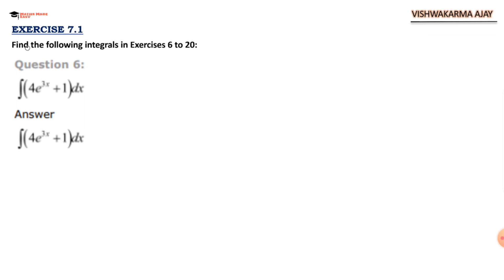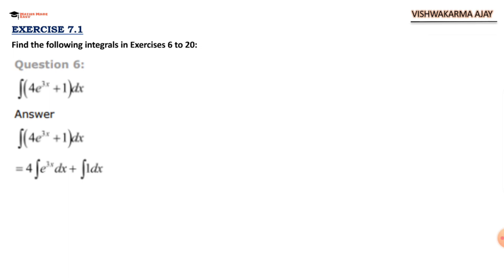This is Part 2 of Exercise 7.1 — find the following integrals, questions 6 to 20. We have to find the integral, essentially finding the antiderivative step by step. For the first question with the exponential function, we take the integral sign inside the bracket. Any coefficient stays outside the integral sign, giving us 4 times the integral of e^(3x) dx plus the integral of 1 dx.